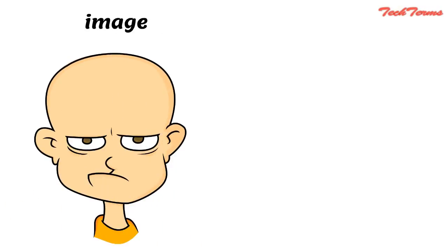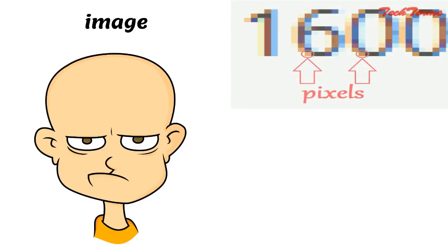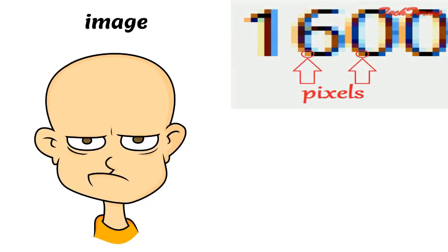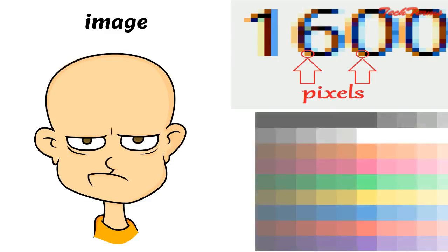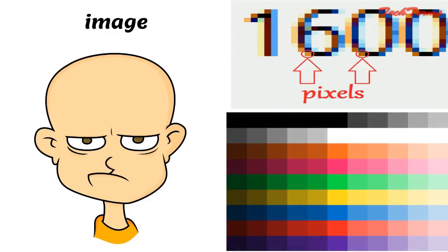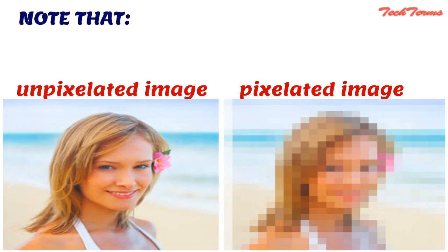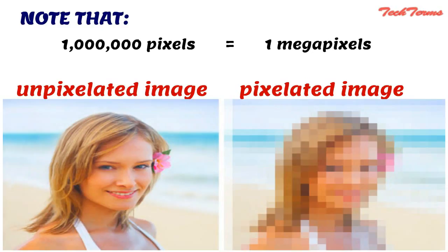While in a colored image, these pixels contain different shades of various colors. Note that 1 million pixels is equal to 1 megapixel. Following is an example of an unpixelated image and a pixelated image.